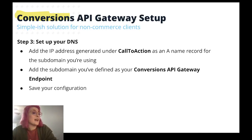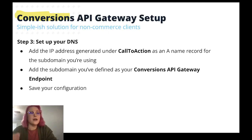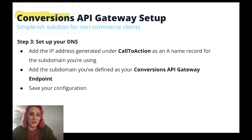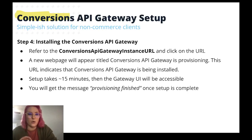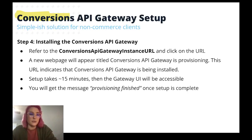Next you'll want to set up your DNS — this is where things get a little hairy because it depends on your DNS provider. In most cases, go to your DNS, log in, and add the IP address generated under 'Call to Action' as an A name record for the subdomain you're using. Then add the subdomain you defined as your Conversions API gateway endpoint and save your configuration. There may be a couple of things to do in there — like TTL (time to live) settings. Once that's done you'll move on to step four. Go to the URL you set up and a new webpage will appear titled 'Conversions API Gateway is Provisioning.' This indicates the gateway is being installed, which takes about 15 minutes or so, and then it'll be accessible. You will get the message 'Provisioning Finished' once setup is complete, and then you can move on to the next step.